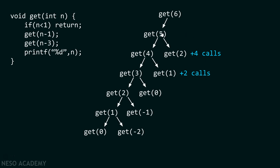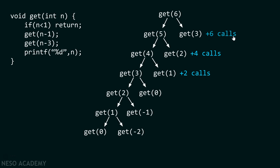Then we return back to get(5) and then get(6). From get(6) we call get(3), because six minus three is three. We already know what get(3) will call — get(3) calls get(2), get(0), get(1), get(-1), get(0), get(-2) — a total of six calls. Therefore, we simply note plus six calls here, and finally this execution is finished.